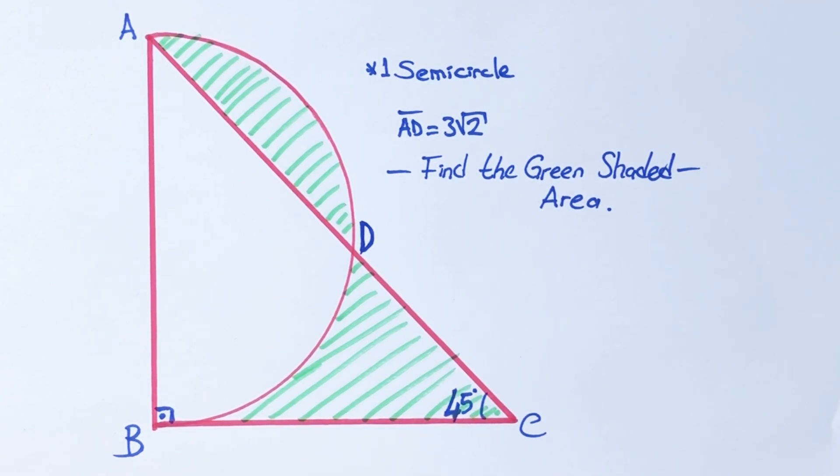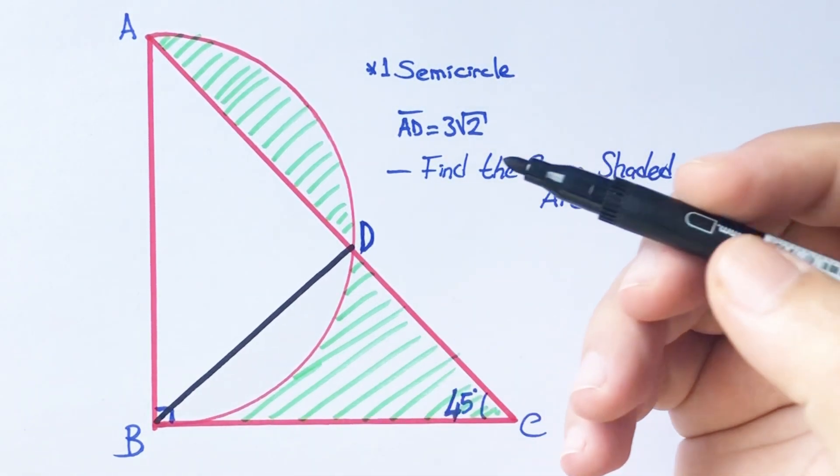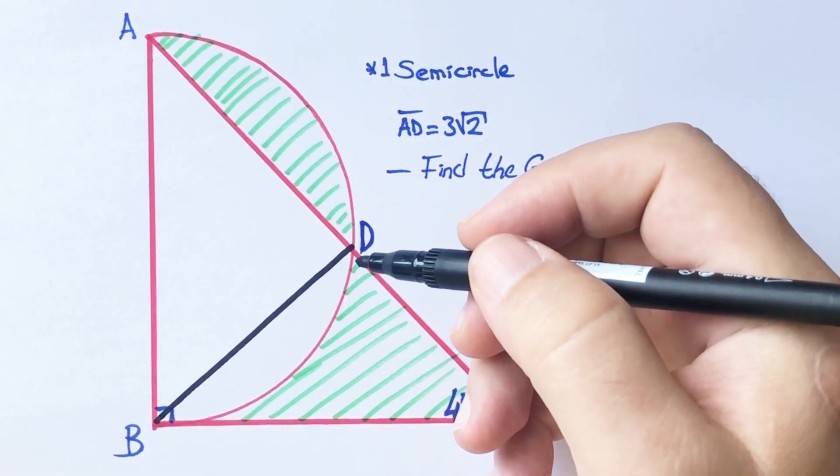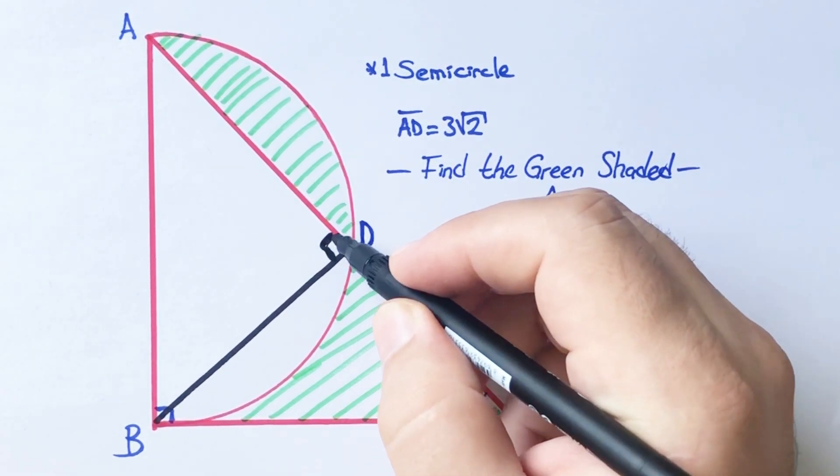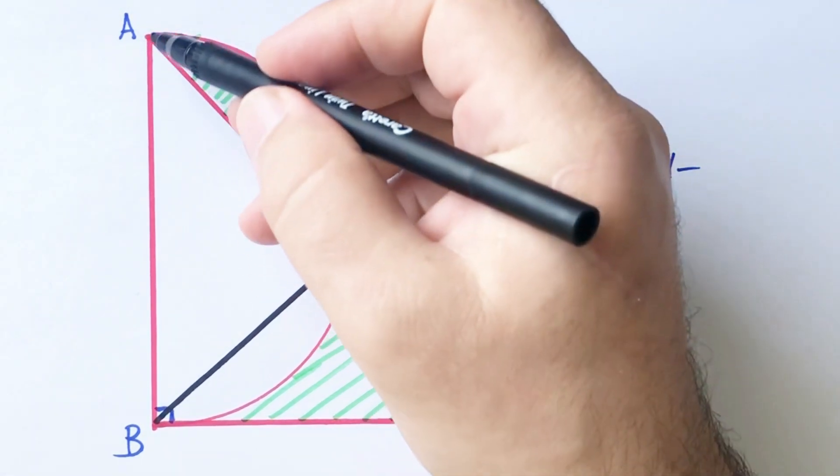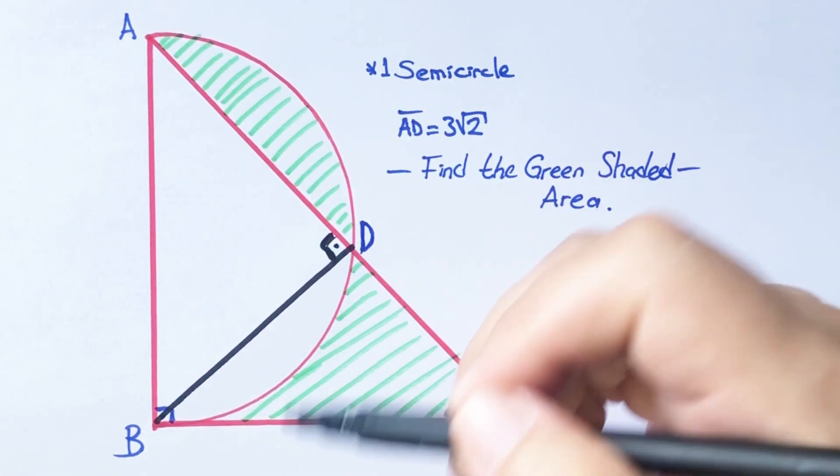Okay, first step: let's connect points B and D like this. We know that this angle must be 90 degrees because it's across to the diameter, right?